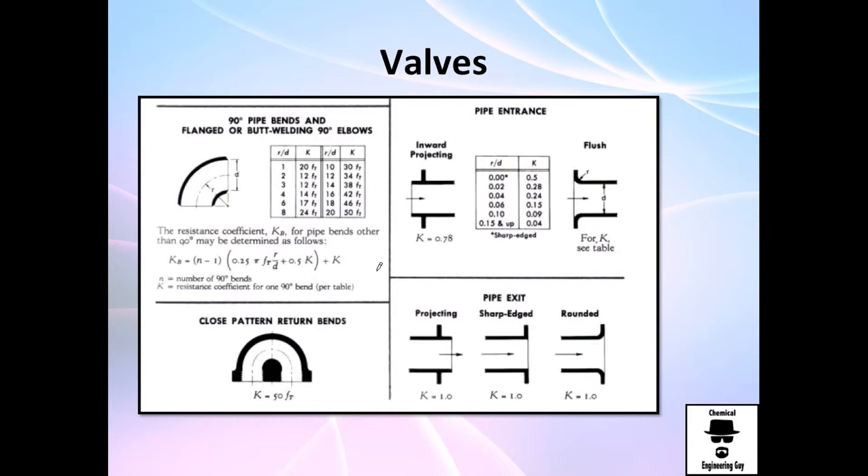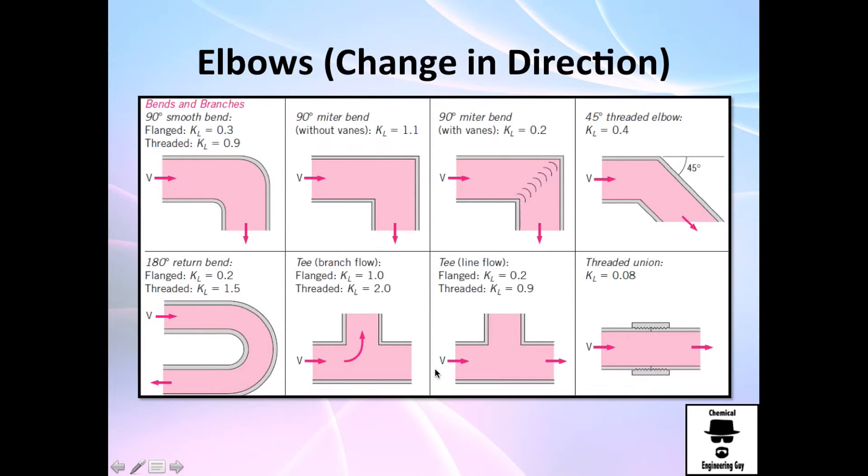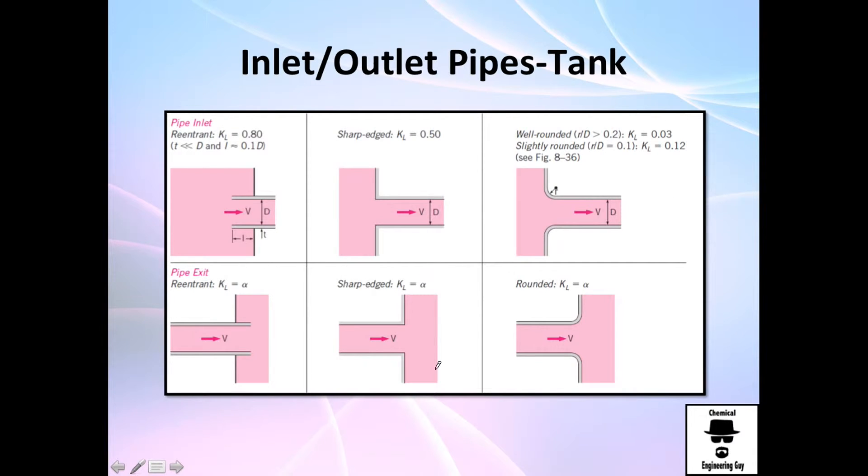Pipe entrance, as I told you, they depend on the ratio of how smooth is the entrance right here to the pipe. Pipe exit, well, it's always 1 as I told you before. And the last, this one right here, it's always alpha. Recall that alpha is always 1.